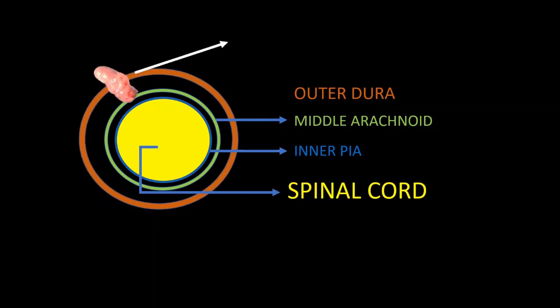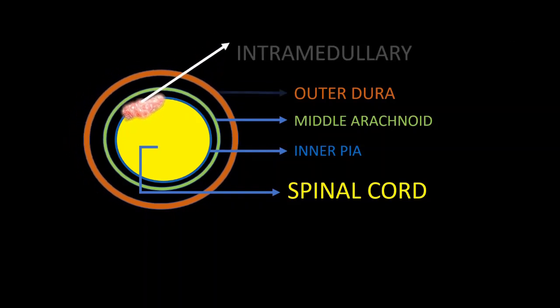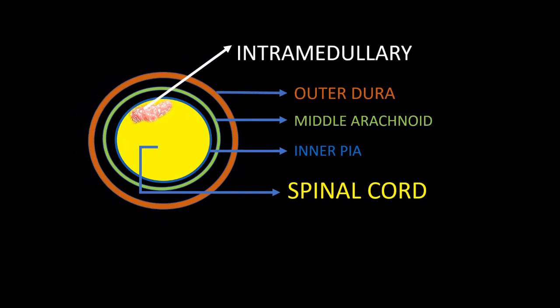If it is present inside the dura but outside the spinal cord, it is called an intradural extramedullary tumor. If the tumor arises within the spinal cord, it is called an intramedullary tumor.